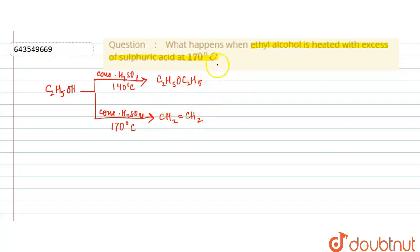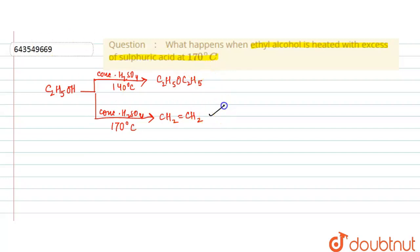In our question, it has been asked what happens when ethyl alcohol is heated with sulfuric acid at 170 degrees Celsius. So our concern is this reaction. Let us see the mechanism of this reaction.